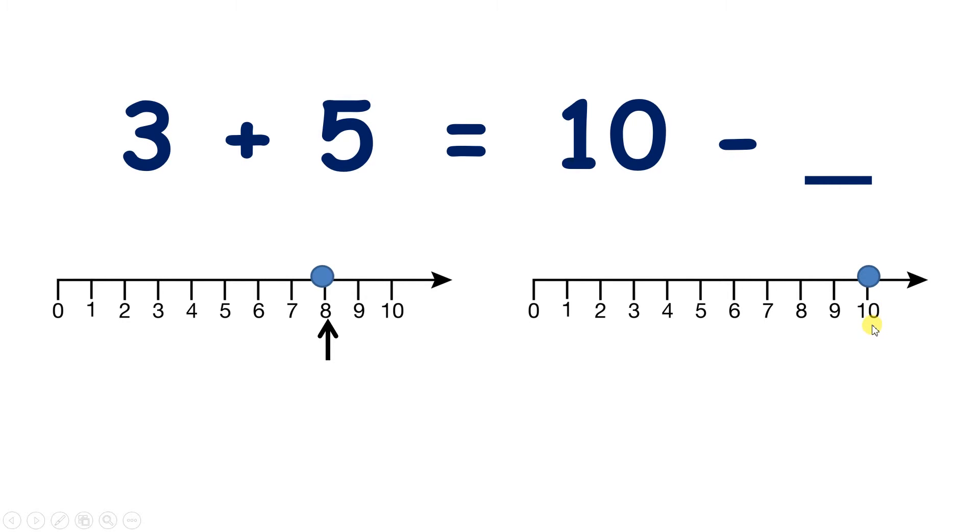Well, we're on 10, and we need to know how many jumps back we need to make to land on 8. So I can see that we just need 1, 2 jumps, so 10 minus 2 is 8, 3 plus 5 is 8, and that equals sign tells us that our answers are the same.